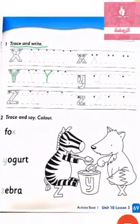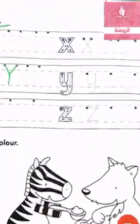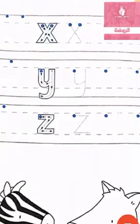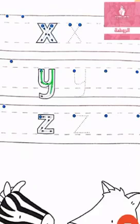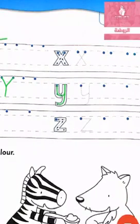Now, I want to write small y. Let's trace small y. From line two, down, around to up. Then, down to line four, around to up.